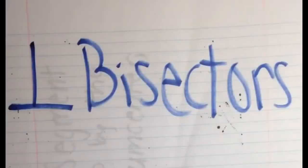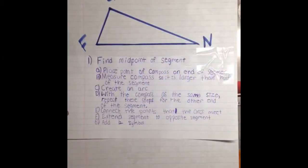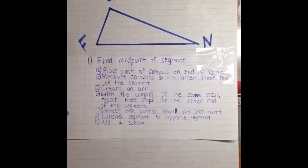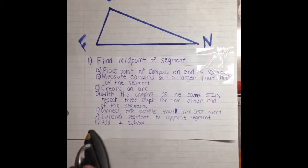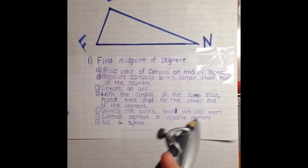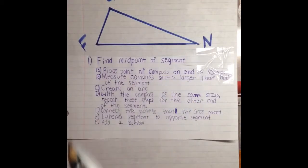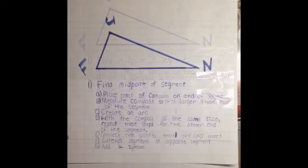Next we will be constructing a perpendicular bisector. First, we are going to find the midpoint of segment FU. To do this, place the compass on the end of the segment and measure it so that it is larger than half of the segment. Create an arc, then do the same thing with the other end of the segment. Then connect the points where the arcs meet, and extend the segment to the opposite segment, then add a right angle symbol. If it sounded confusing, I will just show you.